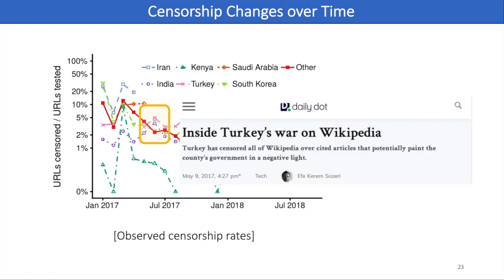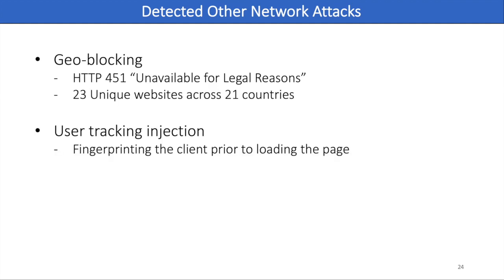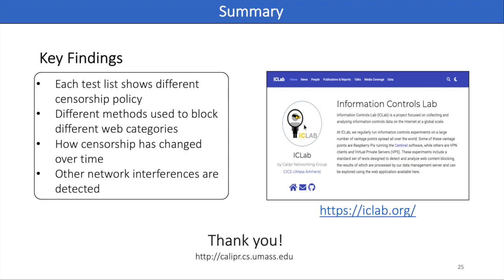Although it is not visible in this chart, the topics censored also changed at this time. Prior to the rise, most blocked sites in Turkey carried pornography and other sexual content, but after the rise, many other new sites were blocked. Finally, the broad and detailed measurements of iCELAB also exposed other forms of network interference, such as geo-blocking, user tracking injection in South Korea, and cryptocurrency mining injection that would have caused the client's browser to mine cryptocurrency.